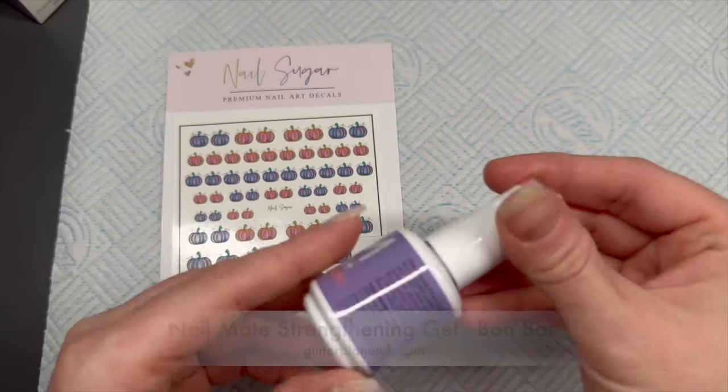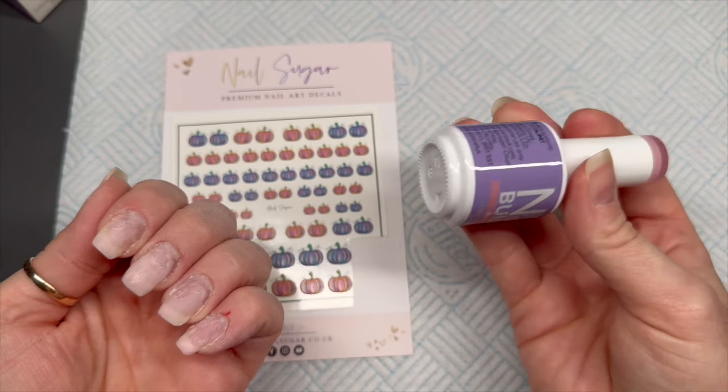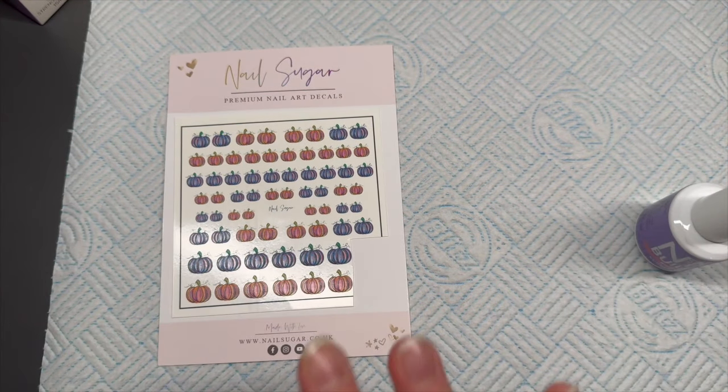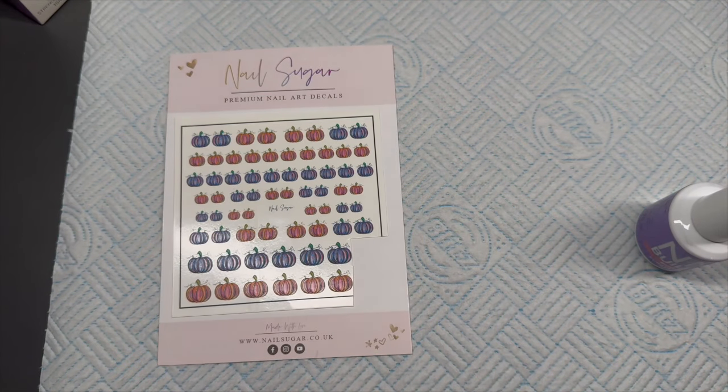So I'm going to use Nail Sugar's Funky Pumpkin decals to create this set. This is just going to be a simple set. We're going to be using Nail Mate's strengthening gel, a rubber base in the bottle. I think that's literally it.